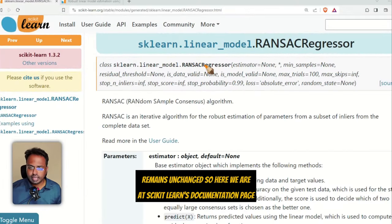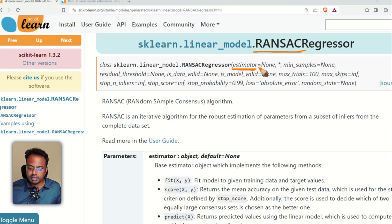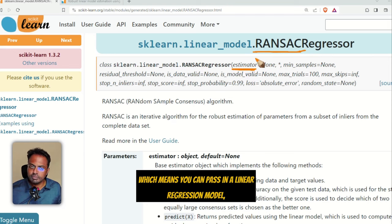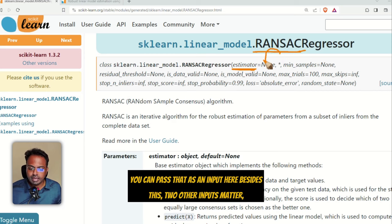So here we are at scikit-learn's documentation page for RANSAC regressor. Now look at this, the very first argument is the estimator, which means you can pass in a linear regression model, random forest model, it does not matter. As long as it is a scikit-learn model, you can pass that as an input here. Besides this, two other inputs matter, which is the minimum number of samples for the random samples that we will be drawing.